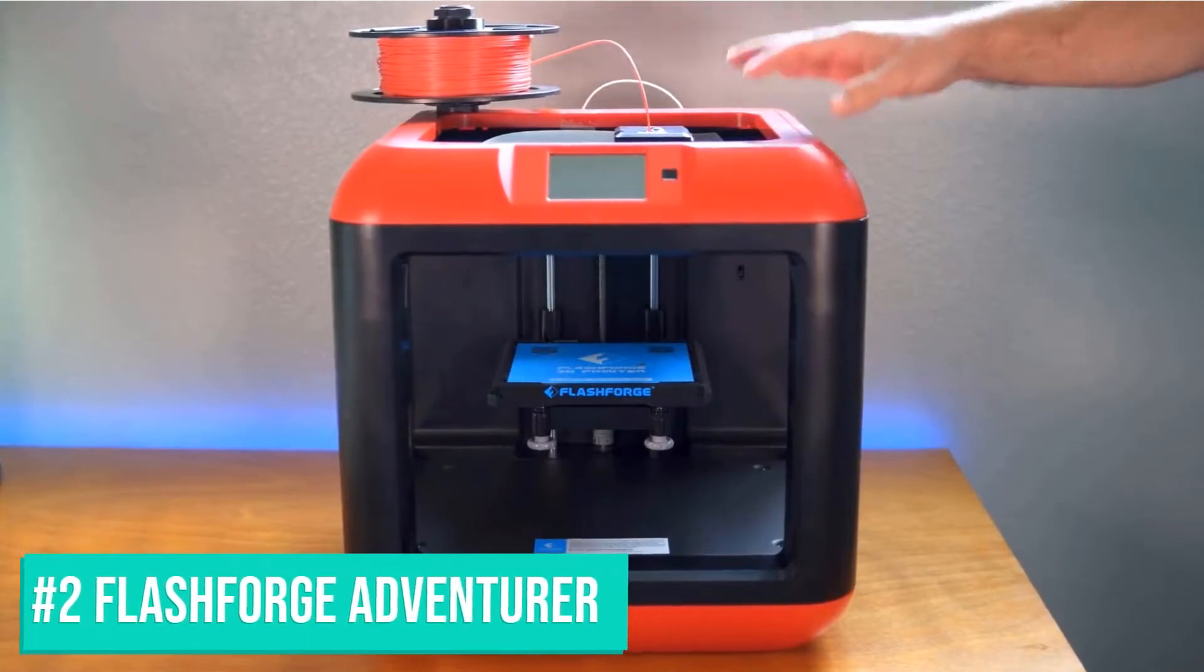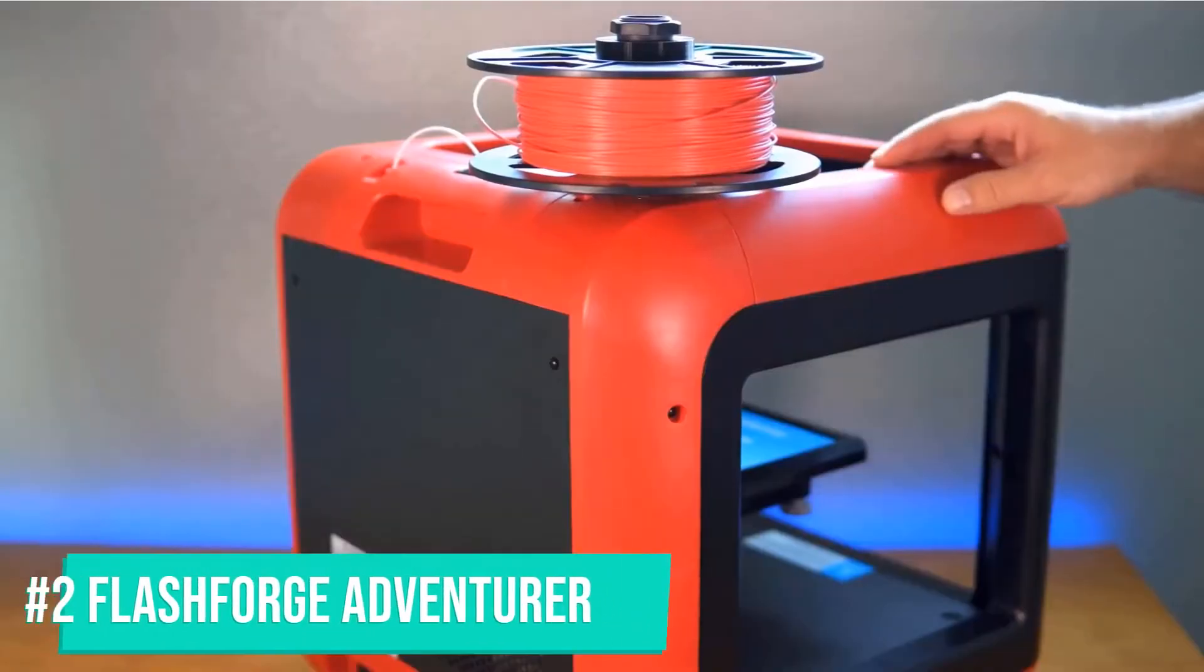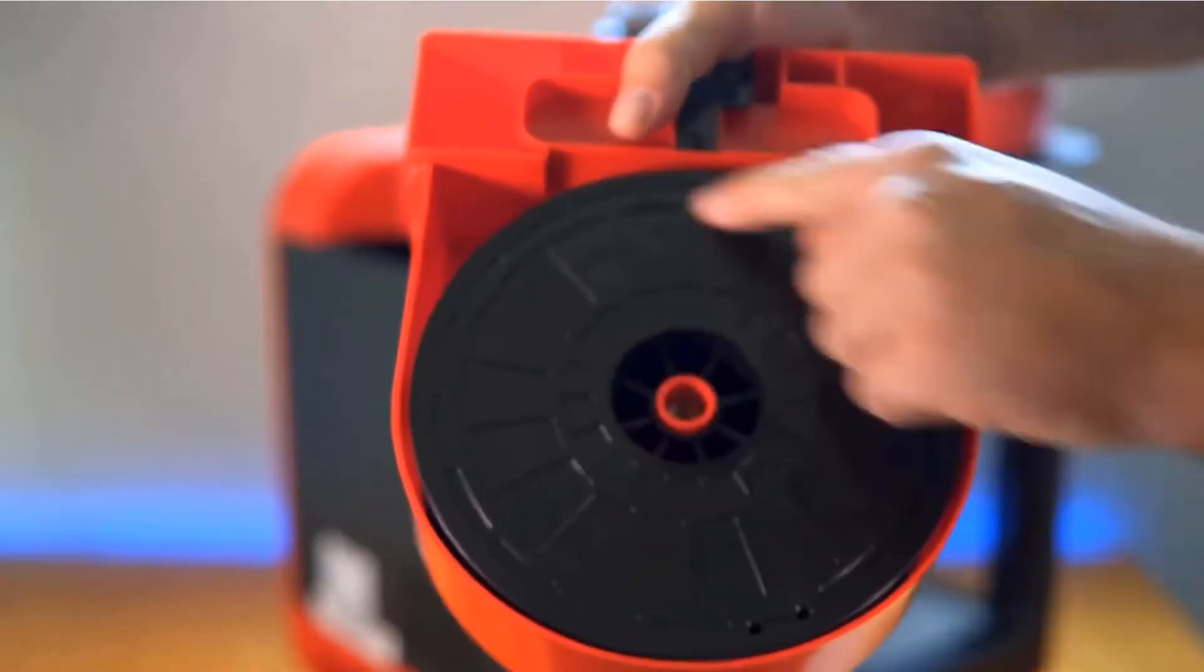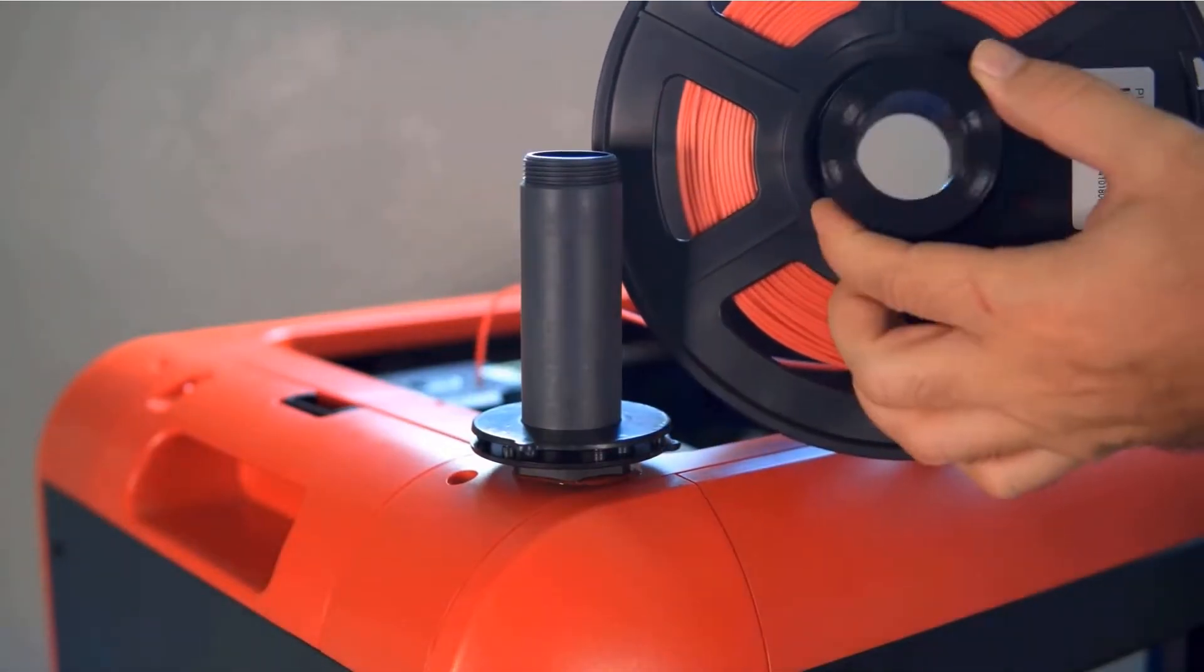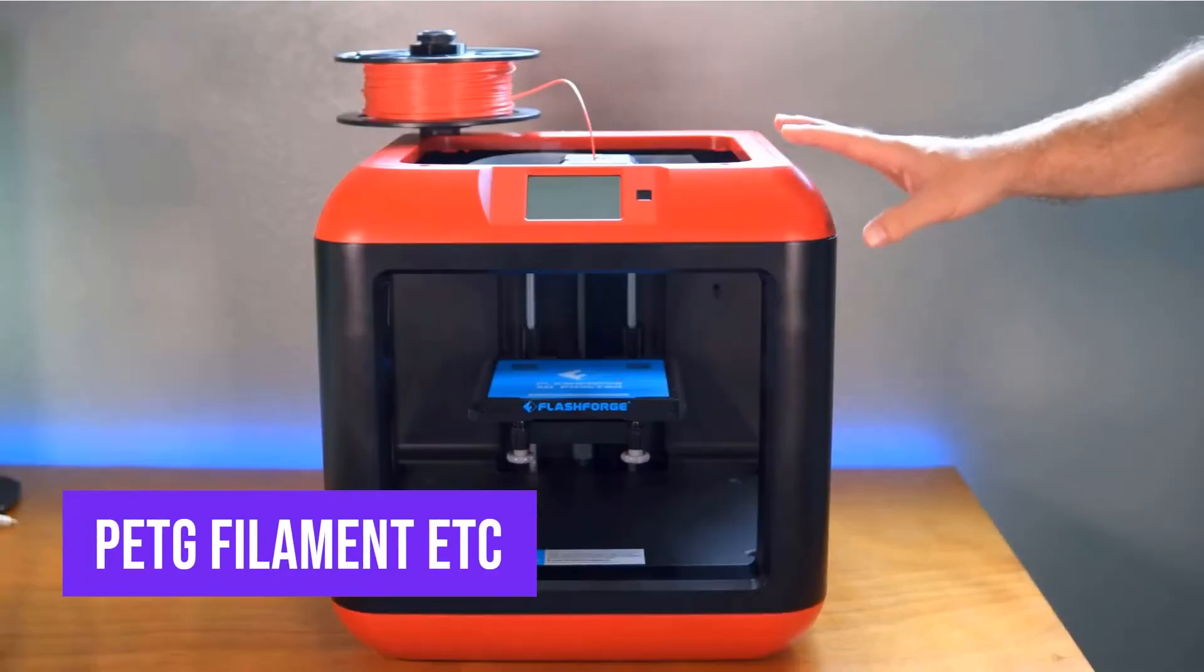The second one on the list is the FlashForge 3D Printer. It features leveling-free, removable, and heating bed, making it much easier to take down models. It's suitable for various 3D printer filaments including PLA, ABS, PETG filament, etc.